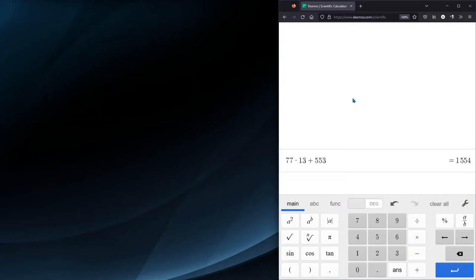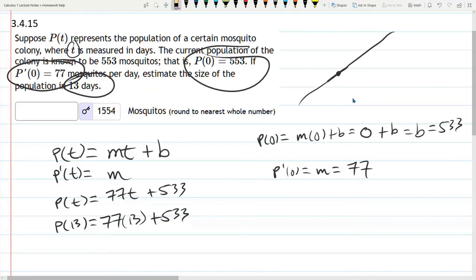So that's the computation done on the calculator. I don't know why the other thing disappears, but 77 times 13 plus 553 is 1554, and you see it right there on the problem page.